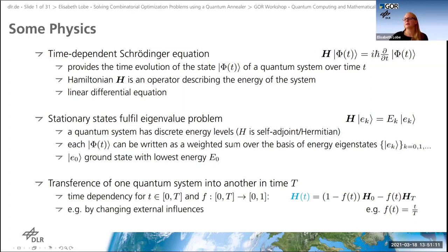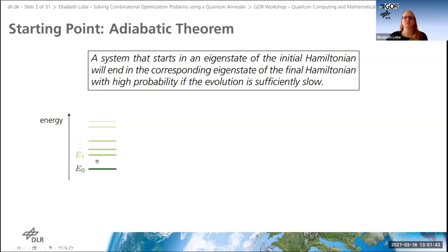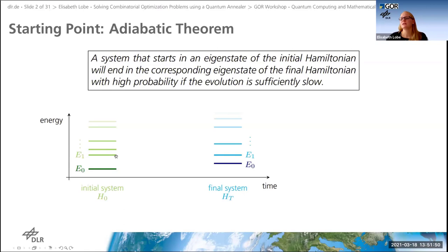This transfer goes from an initial Hamiltonian H_0 to some H_t by some function representing the change of the system, for instance by changing external influences. For our adiabatic annealing machine, the starting point is the adiabatic theorem: a system that starts in an eigenstate of the initial Hamiltonian will end in the corresponding eigenstate of the final Hamiltonian with high probability if the evolution is slow enough.